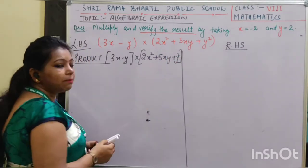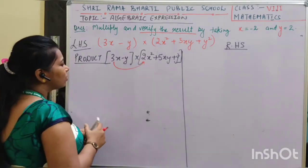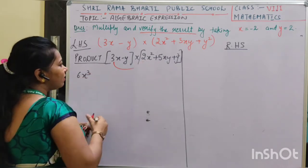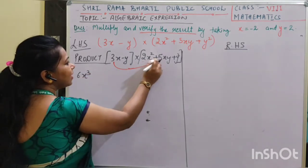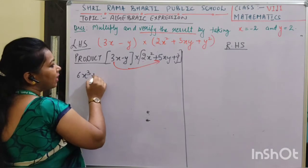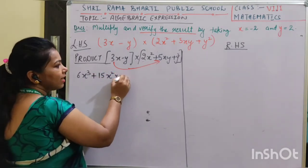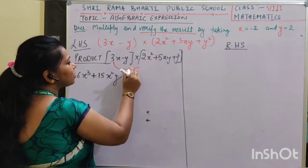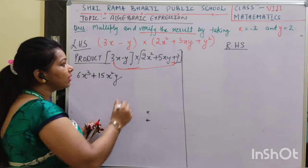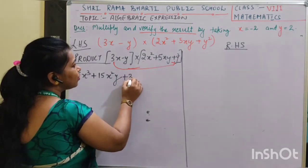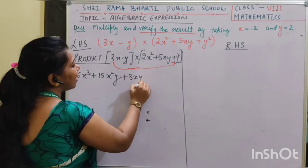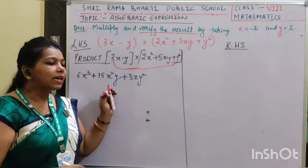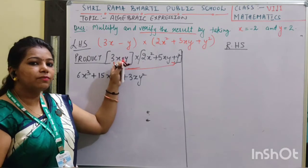I am going to multiply them directly. First I will multiply 3x with the first term — I will get 6x cubed. Then I will multiply it with the second term — I will get plus 15x squared y. Now I will multiply the same term with the last term — I will get plus 3xy squared. Now we are done with the multiplication of the first term with the whole bracket.